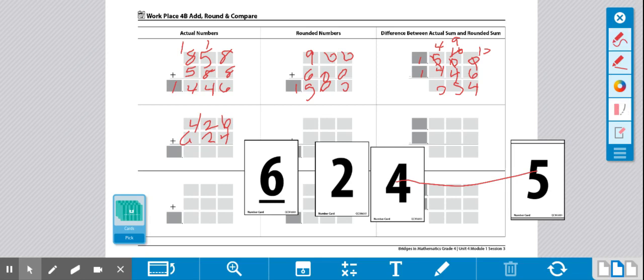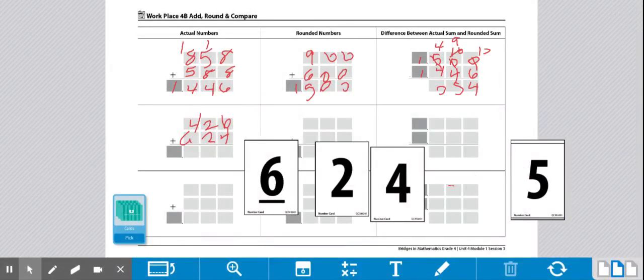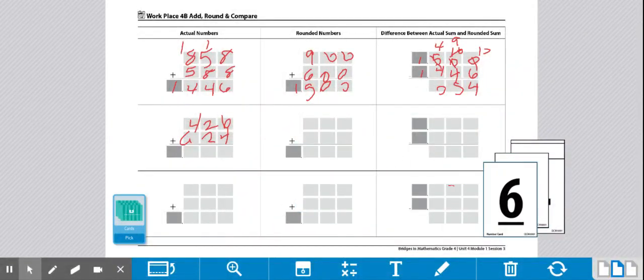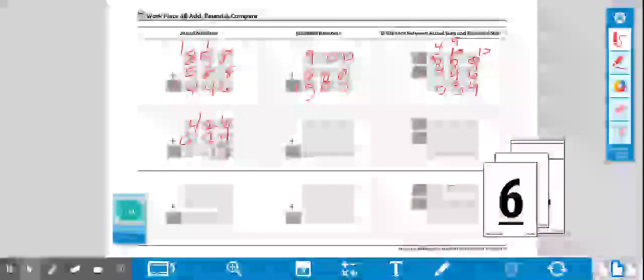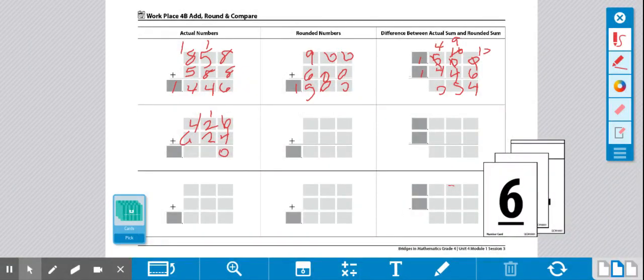I'm going to go ahead and move these cards. Alright. So then we add 426 plus 624. 6 plus 4 is 10. Carry the 1. 2 plus 2 is 4, plus 1 is 5. And then 4 plus 6 is 10. Alright.